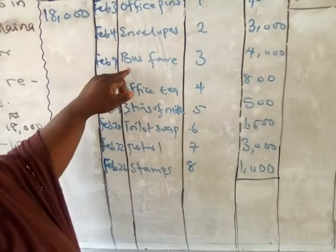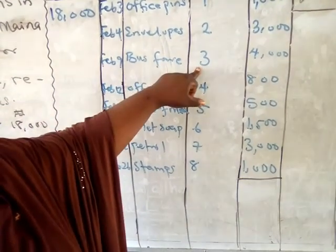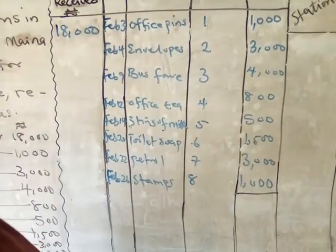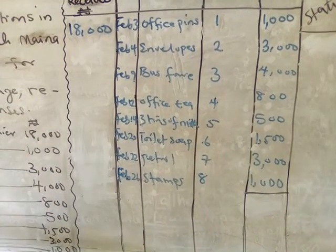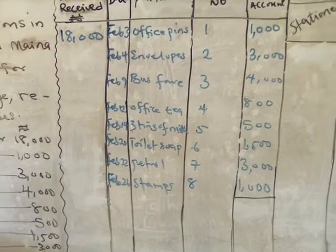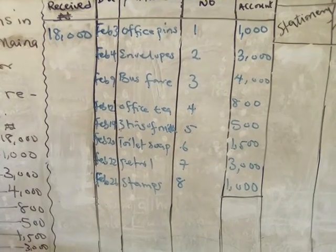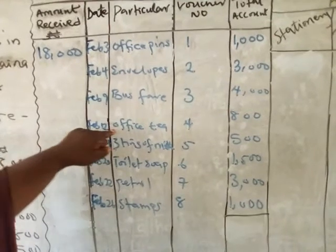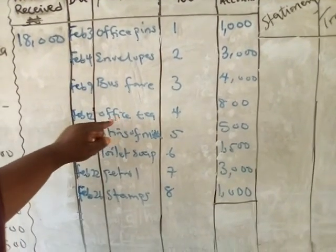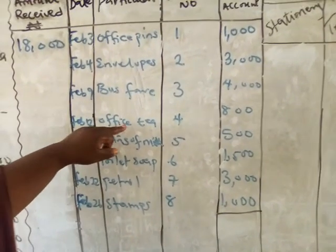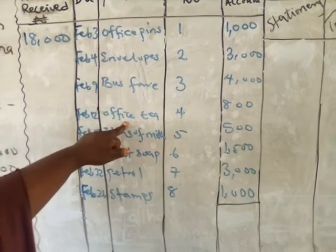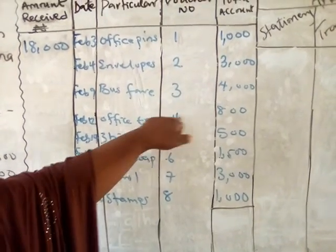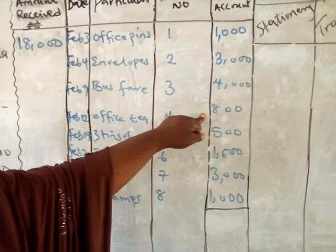Voucher number 3, the amount is $4,000. On February 12th she paid for office pin, which is $800. You write the name of the item under particulars, this is the date, this is voucher number 4, and the amount involved is $800.